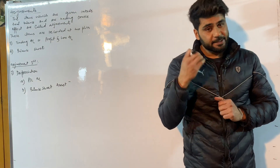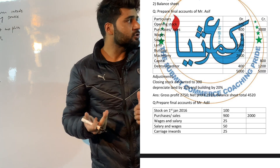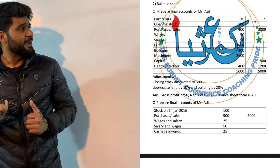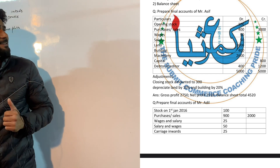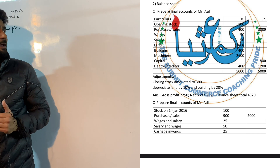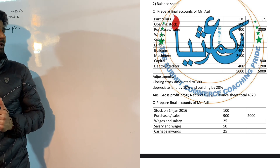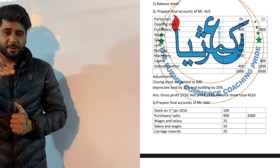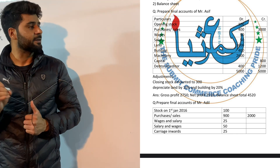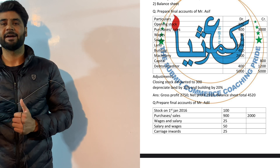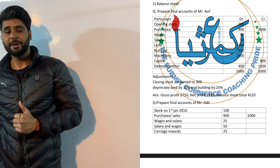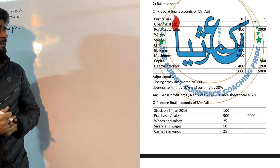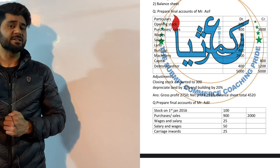Let's go to question number one. In the question, opening stock is 100, purchase and sale is 403,000. Wages are direct expenses and salary is indirect. Land is an asset, building is an asset, machinery is an asset, capital is on the credit side, and we have debtor and creditor — debtor is an asset and creditor is a liability. The closing stock is $300,000. Closing stock will have a double effect: the first effect is that it will come to the trading account, and the second effect is that it will come to the balance sheet.